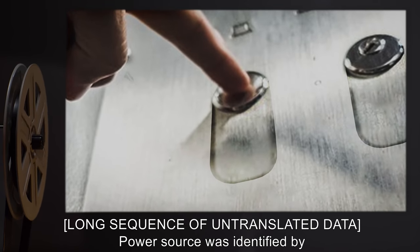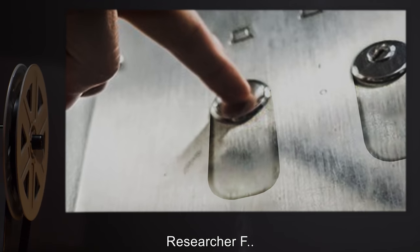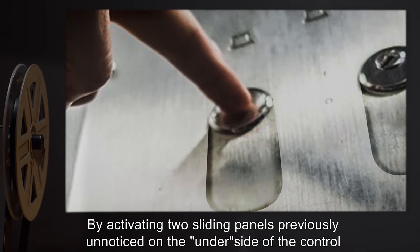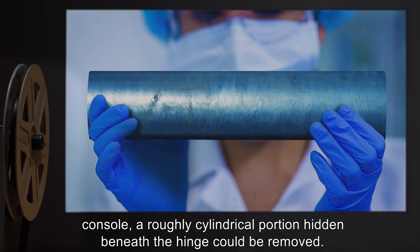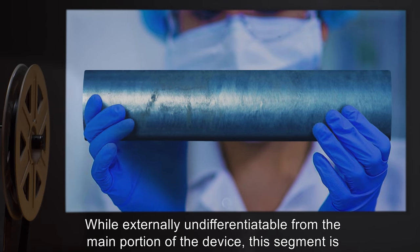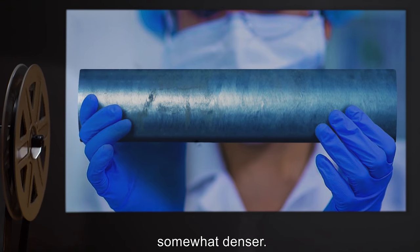[Long sequence of untranslated data.] Power source was identified by Researcher F by activating two sliding panels previously unnoticed on the underside of the control console. A roughly cylindrical portion hidden beneath the hinge could be removed. While externally undifferentiable from the main portion of the device, this segment is somewhat denser.